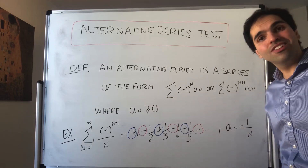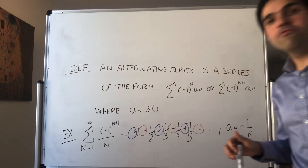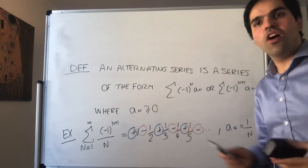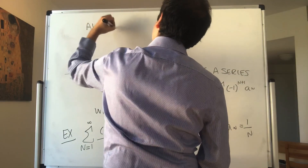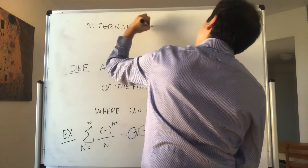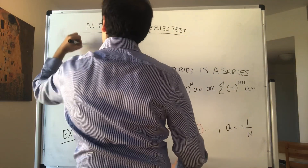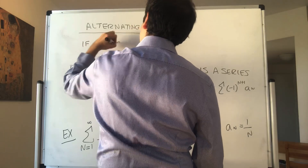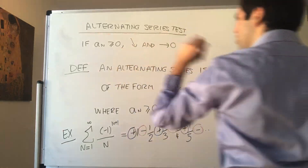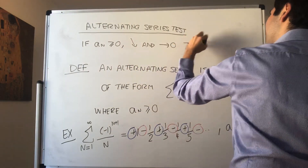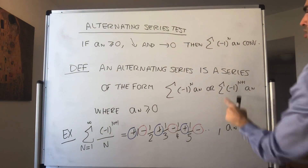And now without further ado, here's the alternating series test. It essentially says that under some very mild conditions, the alternating series converges. Namely, if a_n is non-negative, decreasing, and converges to zero, then the alternating series converges — that is, the sum of (-1)^n * a_n converges, or similarly for (-1)^(n+1) * a_n.